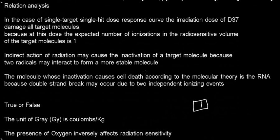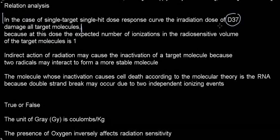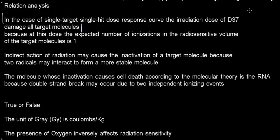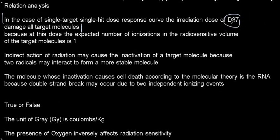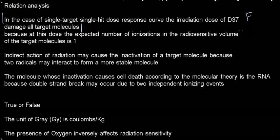Let's break this down — there's quite a big statement here. In the case of a single target single hit dose-response curve, the radiation dose D37 damages all target molecules. Basically, all D37 means is that applying the dose D37 causes the surviving fraction to drop down to 37 percent. So by definition, if you're applying this dose, you're not going to have all your target molecules damaged — only roughly 37 percent less — so this would be false.